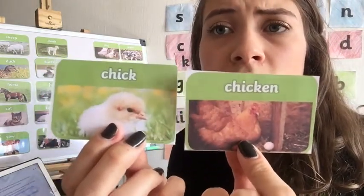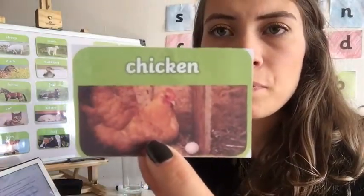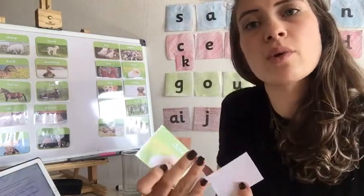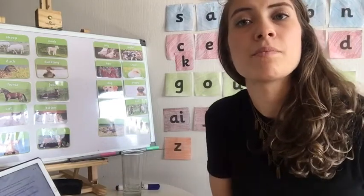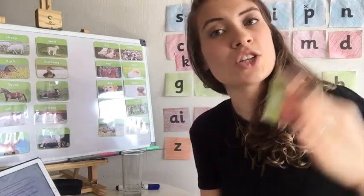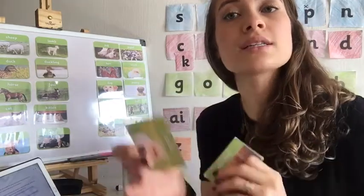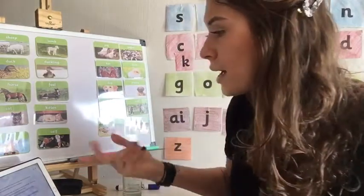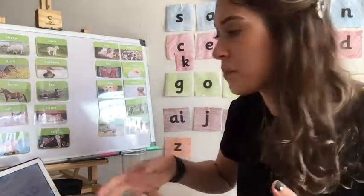They are similar in many aspects but different in some, for example the color or the size. It happens with us as well — when we are just a baby we start to grow up, and then we become a toddler, then a child, then a teenager, then an adult, and then an elderly person.